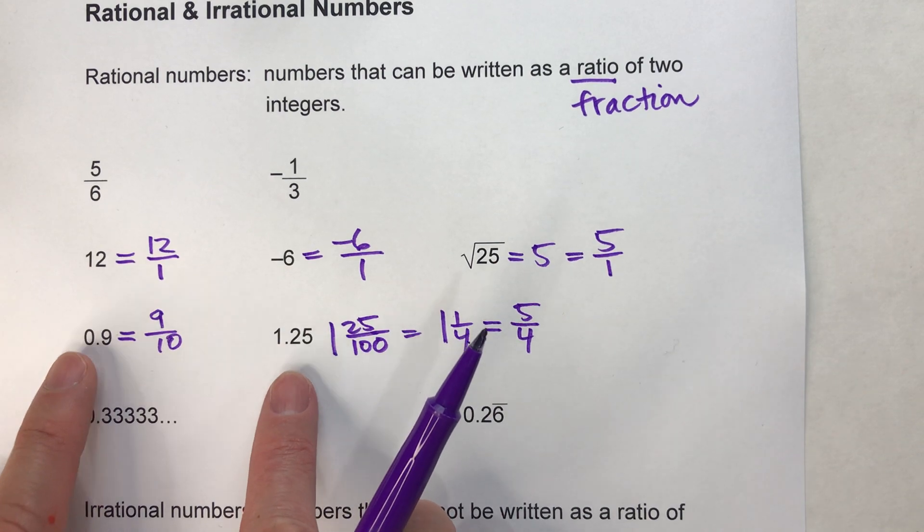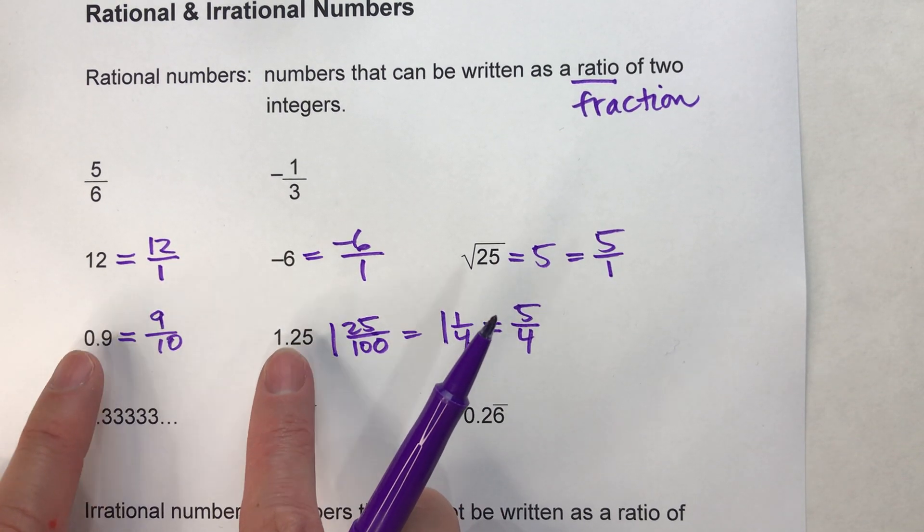So again, all decimals that end are rational because they can all be written as a fraction.